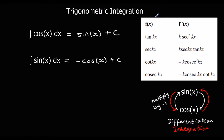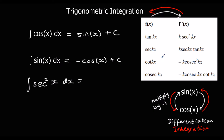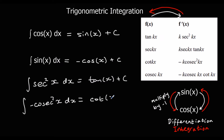We can also use this from the formula book — differentiating going forwards and integrating is the same thing in reverse. So the integral of sec² x with respect to x gives tan x plus c. The integral of negative cosec² x gives cot x plus c. And the integral of positive cosec² x with respect to x gives negative cot x plus c.